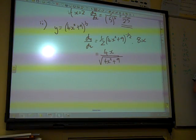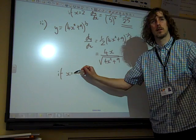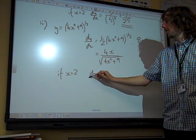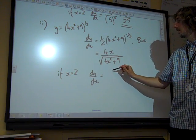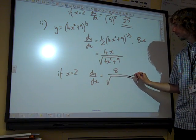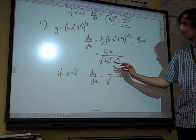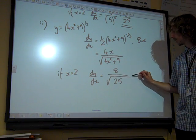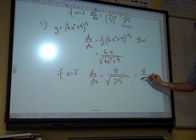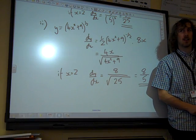And the question, of course, didn't want dy/dx, we wanted the gradient when x is 2. If x is 2, dy by dx is, well, we've got 8 over the square root of 25. So, we end up with 8 over 5. Brilliant!